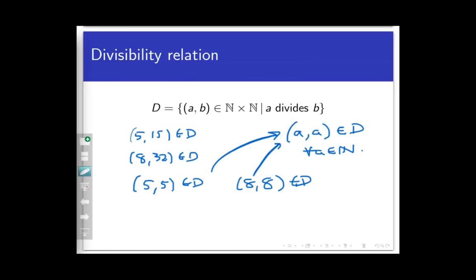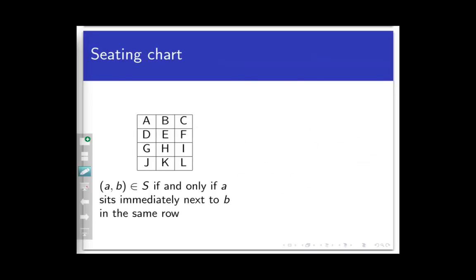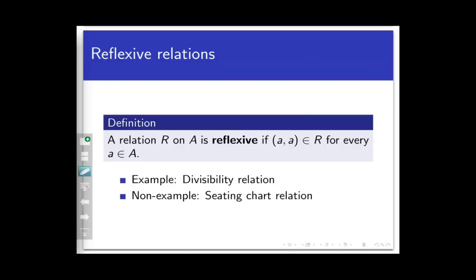This kind of self-referencing behavior does not happen for all relations. For example, in the sitting-next-to relation from the last video, X,X is never in the relation because a student cannot sit next to himself. Likewise, in most social networks, you can't friend yourself or follow yourself. So a relation in which every point in the set is related to itself is special. We say that a relation R on a set A is reflexive if A,A belongs to R for every A in the set A — in other words, every point is related to itself.